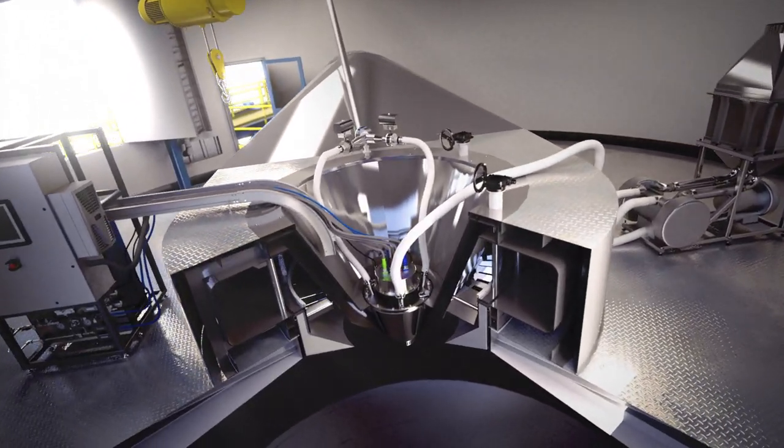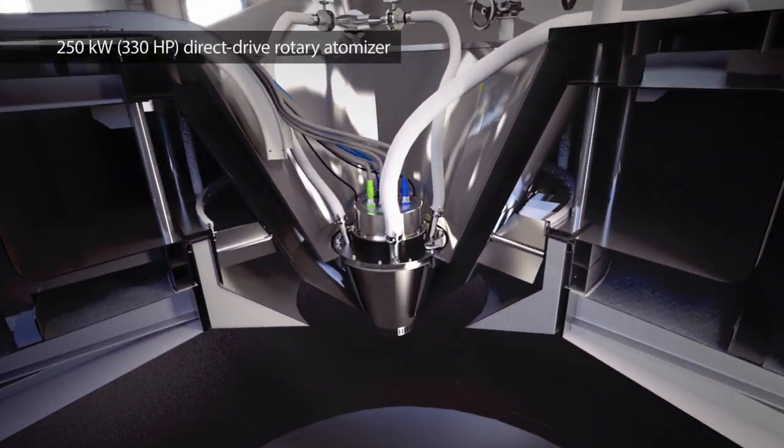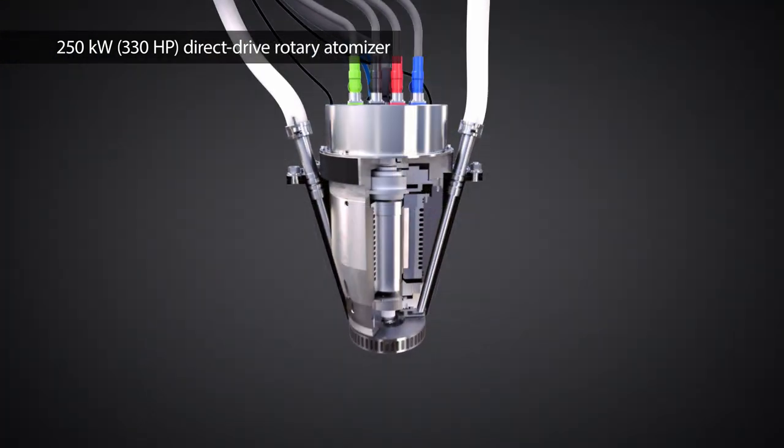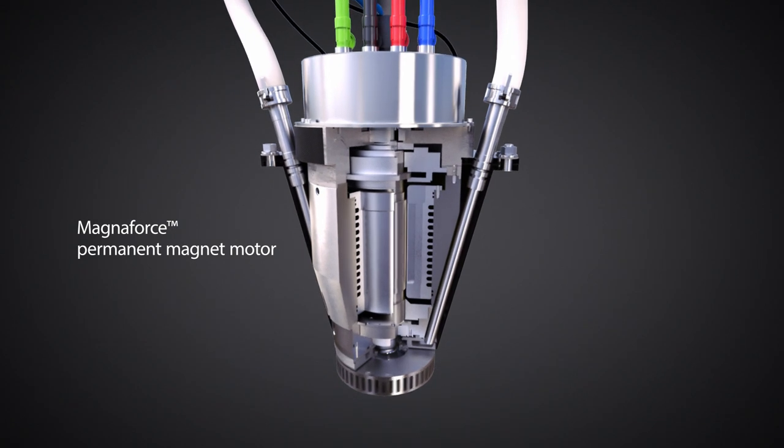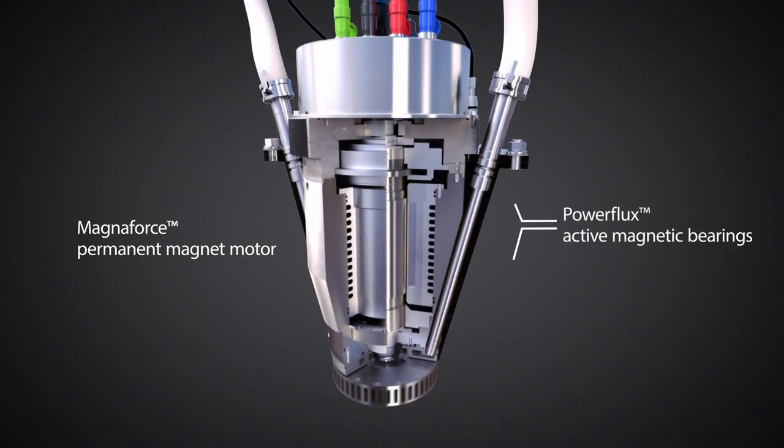At the heart of Dieter's latest spray drying system is the patented MSM250, a 250-kilowatt direct-drive rotary atomizer that includes a Calnetics MagnaForce permanent magnet motor on power flux active magnetic bearings.